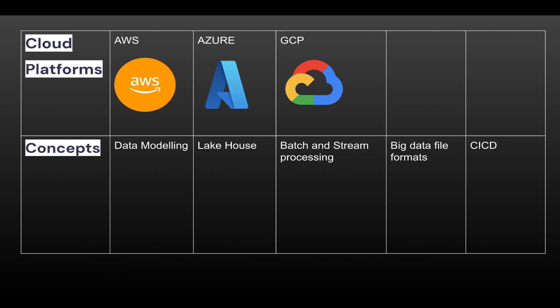Right now everything is on cloud and most companies are either migrating to the cloud or already there. The major cloud platforms are AWS, Azure, and GCP. It's always good to have at least one cloud platform knowledge in depth — understanding what it offers, the different services, and how to use them. Having knowledge of two platforms is really helpful and beneficial for organizations.